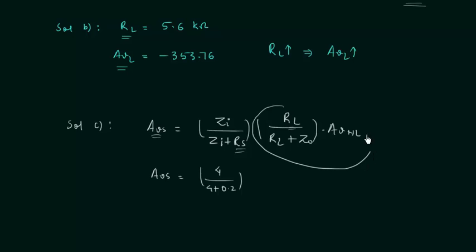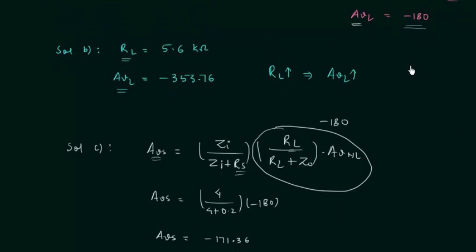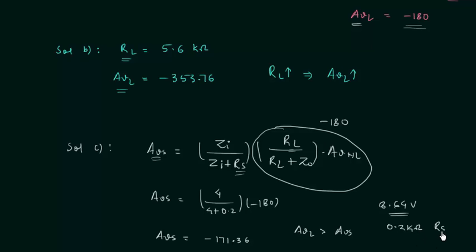Substituting, AVS equals minus 171.36. Comparing AVS with AVL, AVL is greater than AVS, and the reason is the source resistance. With source resistance in this circuit the gain reduces, and in this case there is a reduction of 8.64V due to the 0.2kΩ source resistance.